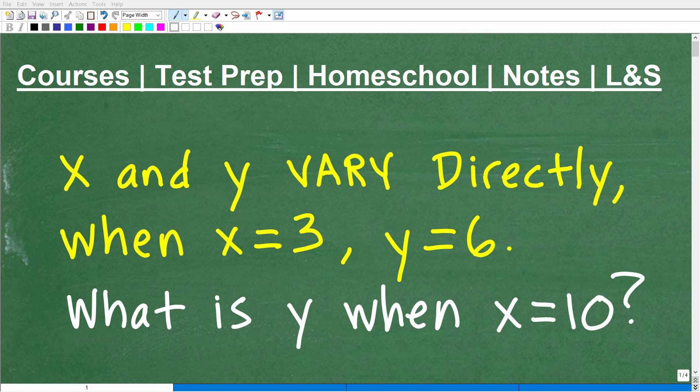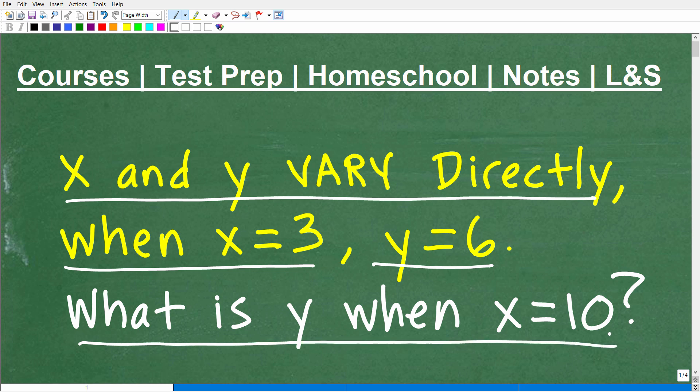Let's go ahead and read the problem. It says x and y vary directly. When x is equal to 3, y is equal to 6. What is y when x is equal to 10?